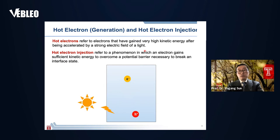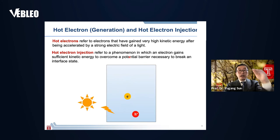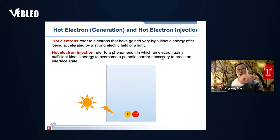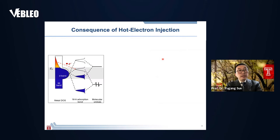That means we need the injection of hot electrons into surface adsorbents. Hot electron injection can occur only when the electrons have high enough energy to overcome the potential barrier necessary to cross the interfacial states — allowing the electrons to transfer from the metal nanoparticles into the surface adsorbents.